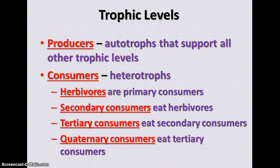The consumers are all heterotrophs, and we have several different levels. Herbivores are the primary consumers — the ones that eat the producers — such as cows or fish that eat phytoplankton. Secondary consumers eat the herbivores; these are carnivores, so when we eat a hamburger we would be a secondary consumer. Tertiary consumers eat the secondary consumers, and quaternary consumers eat the tertiary consumers. Most organisms eat more than one thing, so you might be a secondary consumer in one instance and a tertiary or herbivore in another.